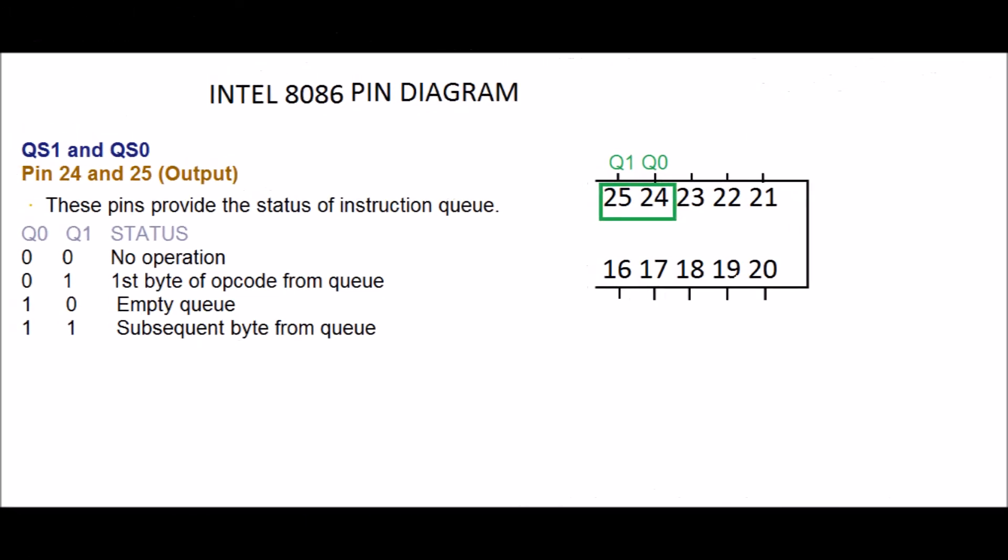QS1 and QS0. PIN 24 and 25, output. These PINs provide the status of instruction queue. When QS1 and QS0 is 00 then status is no operation. When QS1 and QS0 is 01 then status is first byte of opcode from queue. When QS1 and QS0 is 10 then status is empty queue. When QS1 and QS0 is 11 then status is subsequent byte from queue.